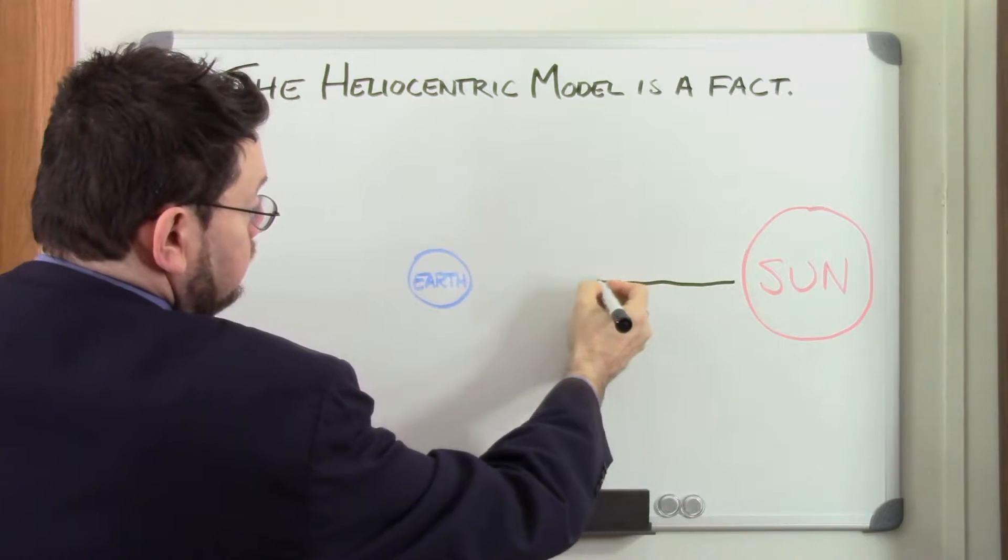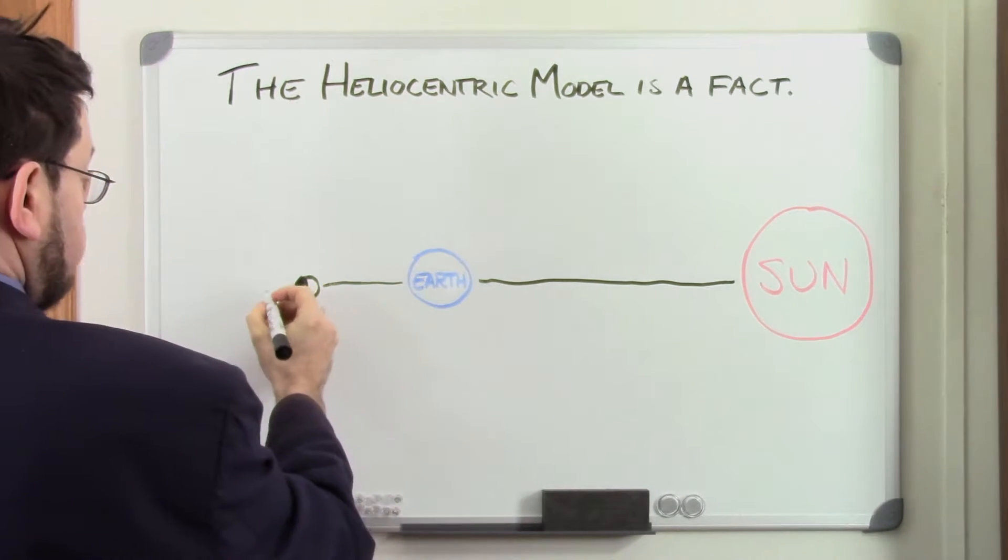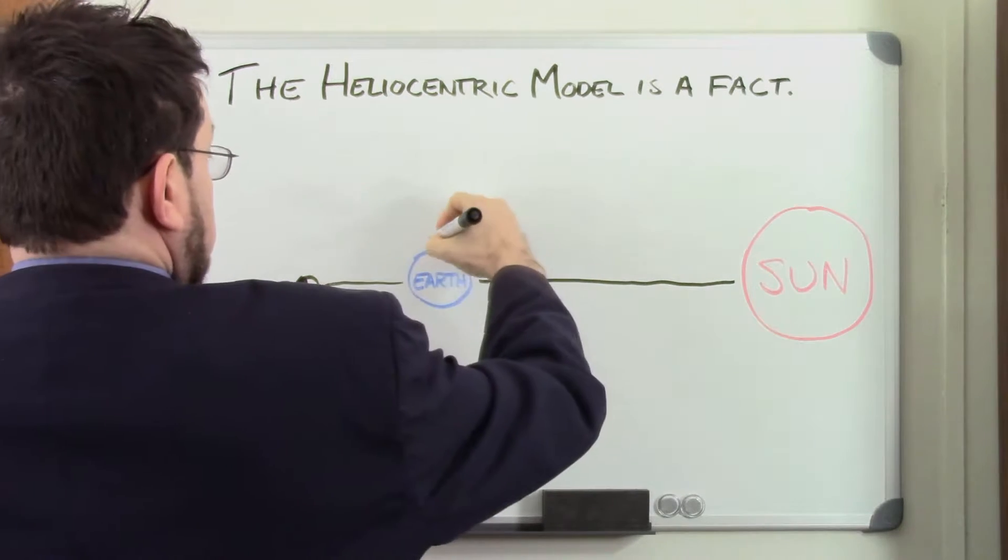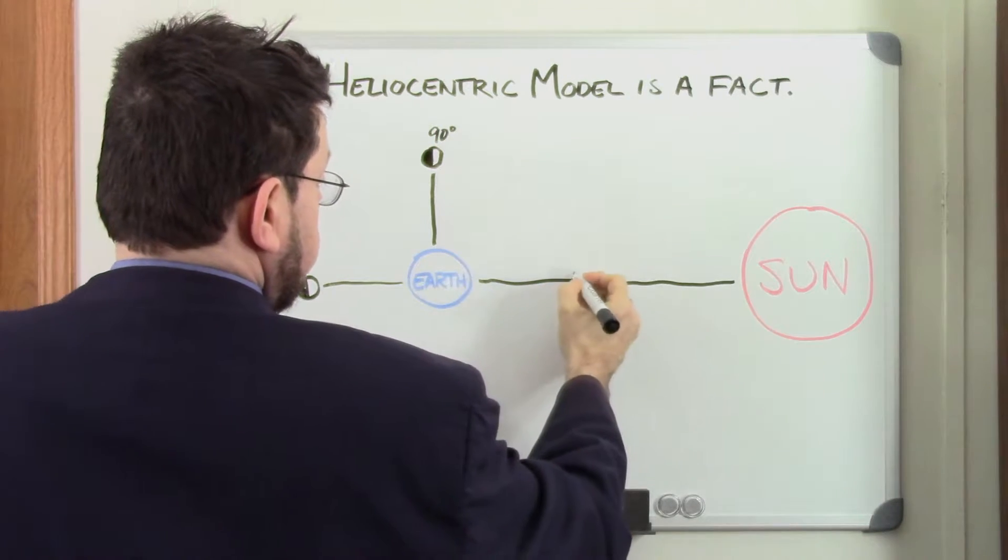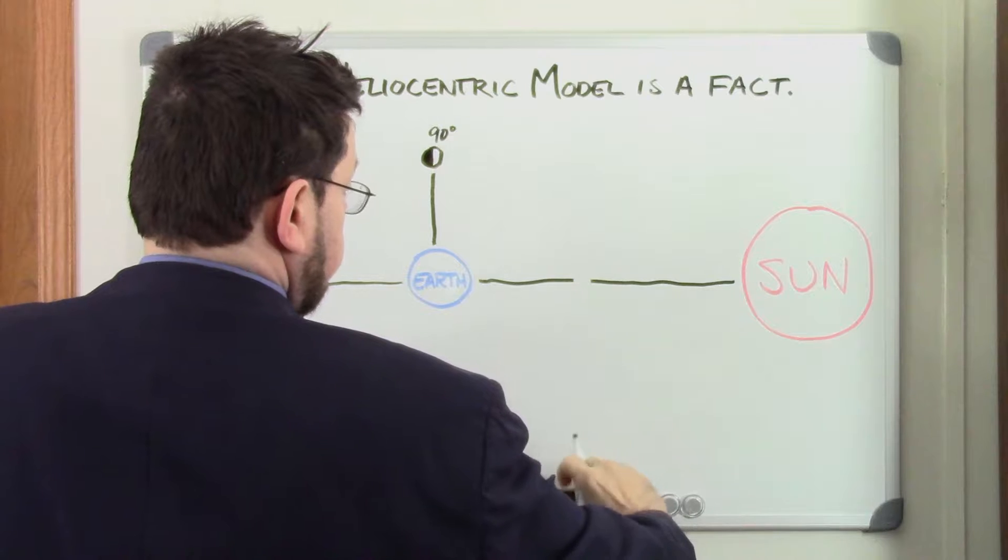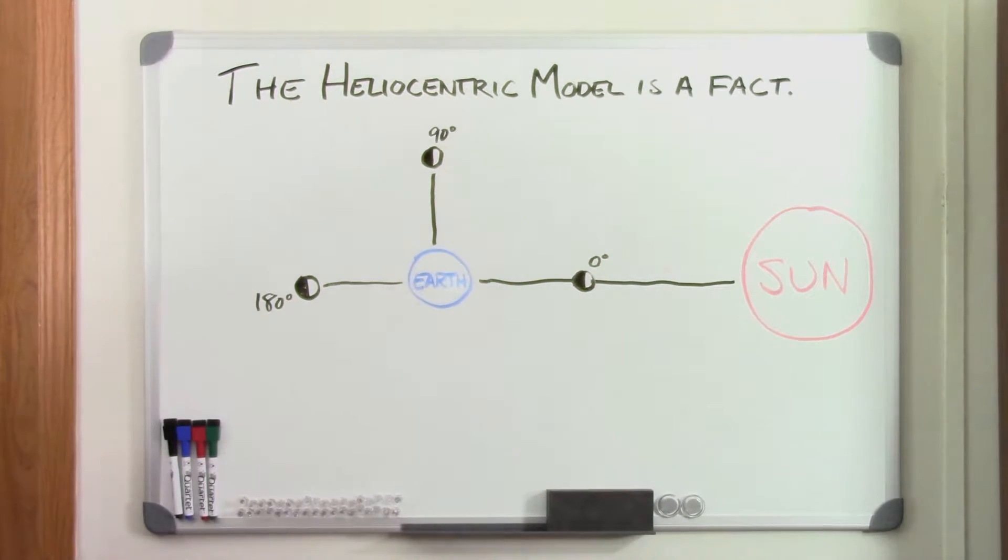When the moon was nearly 180 degrees from the sun, it would appear fully lit. When it was 90 degrees from the sun, it would appear half-lit. And as it approached the sun in the sky, the lit portion shrank away to nothing, in just the way that it would if the moon was a sphere reflecting the sun's light.